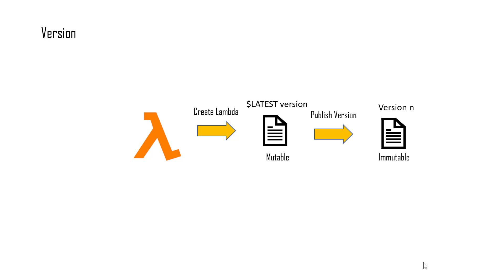In this chapter we'll talk about a very important concept called versioning. Whenever you create a Lambda function, what gets created is a version that is mutable, called the $LATEST version. You can keep making changes to this version — adding or deleting code, or adding more lines. Once you are sure your function is perfect, you publish that version so it becomes completely immutable — not just the code, but also the configuration and environment variables.